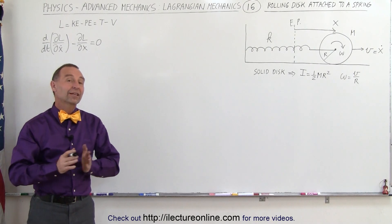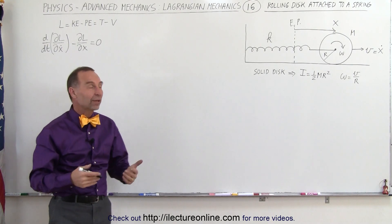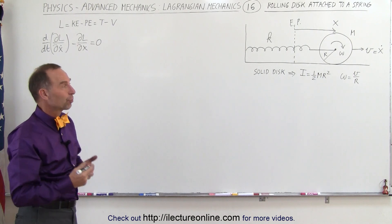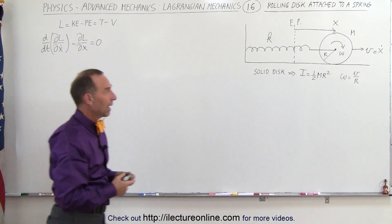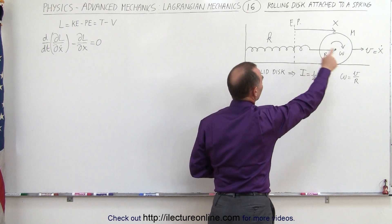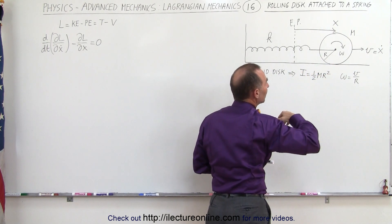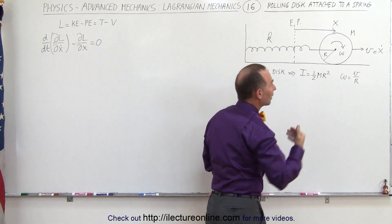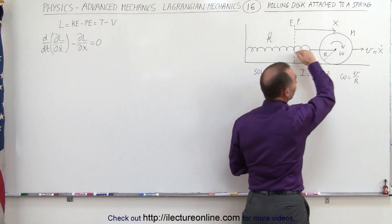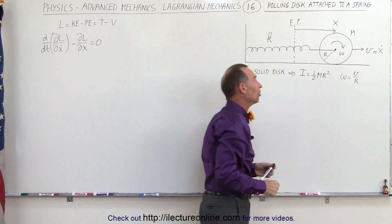Welcome to our lecture online. Our next example on how to use the Lagrangian is the rolling disk attached to a spring. As the spring is moving back and forth, the rolling disk is moving back and forth as well. Notice that there will be two kinds of kinetic energy involved here: translational kinetic energy and rotational kinetic energy.